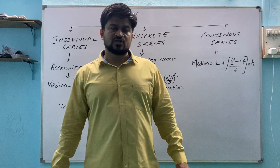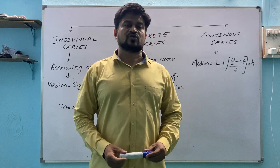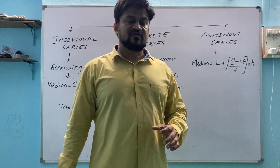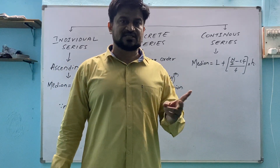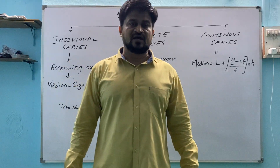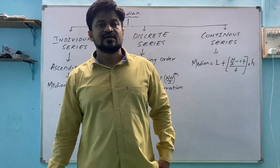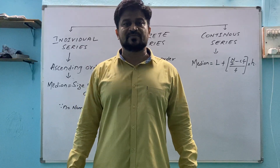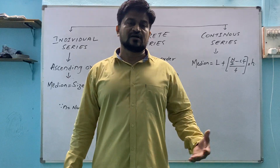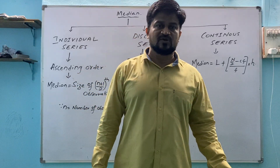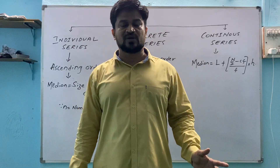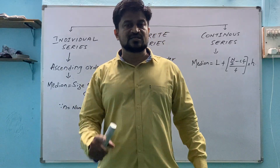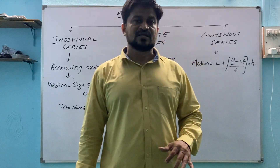Earlier we discussed measures of central tendency — the first topic, mean. In individual series, mean uses sigma xi by n. For discrete series, mean uses sigma fi xi by sigma fi. For continuous series, we use a five-column table with ci, fi, xi, ui, fi*ui, and the formula: mean equals A plus sigma fi*ui by sigma fi, multiplied by h.